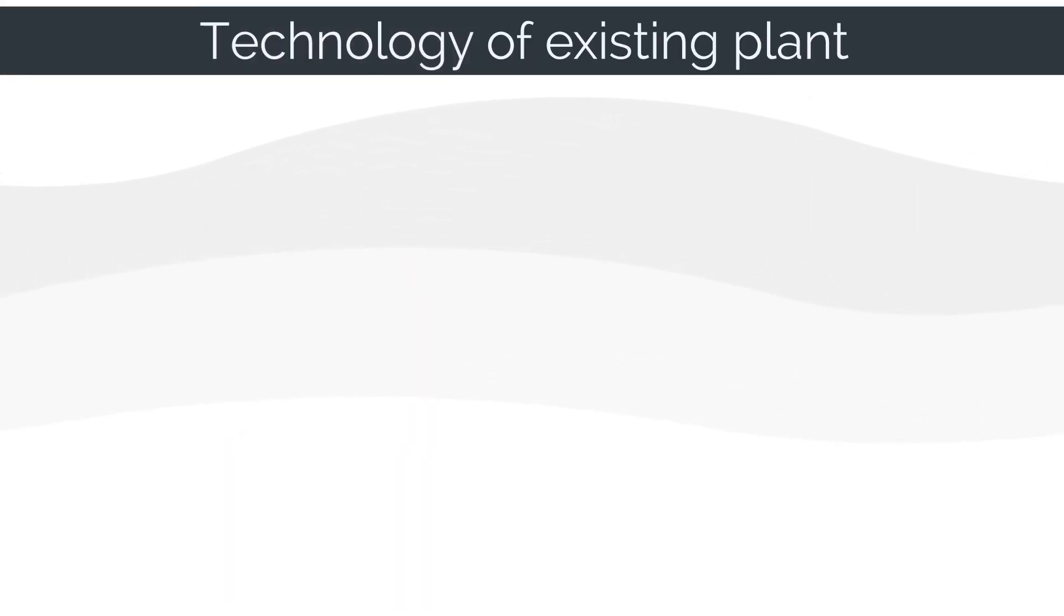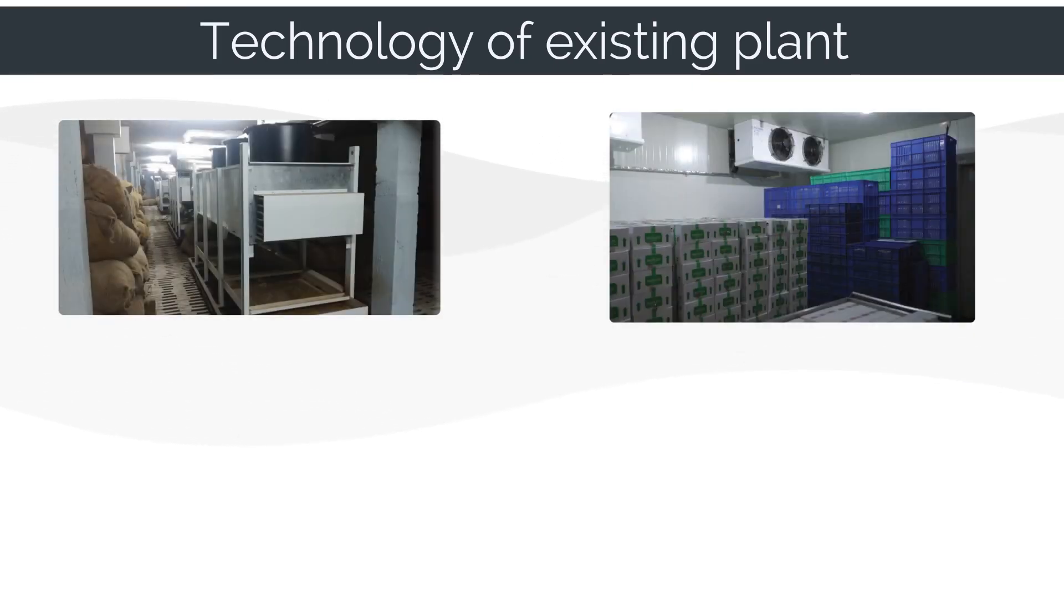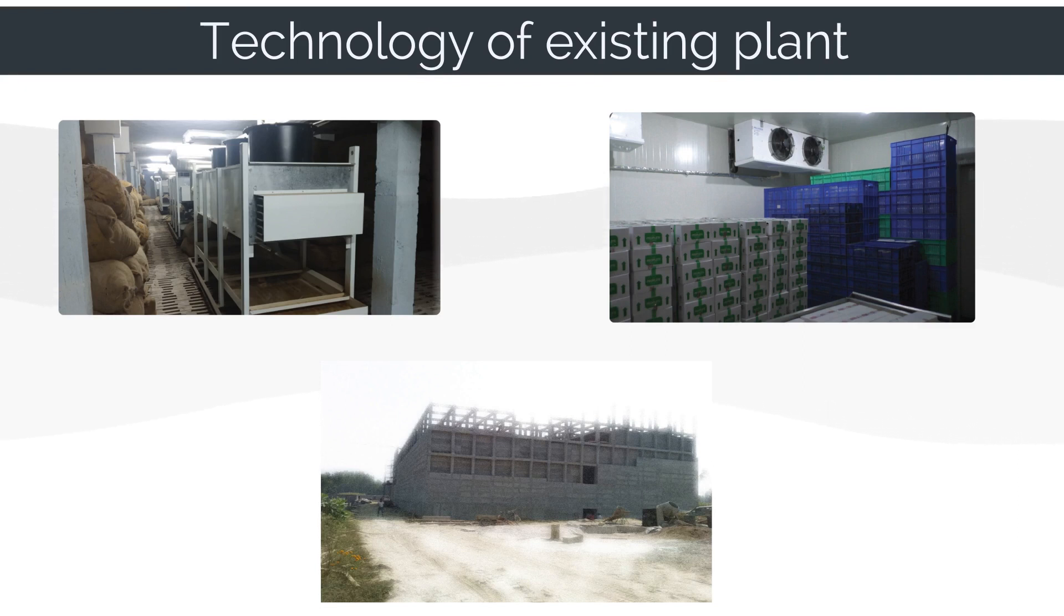4. Technology of existing plant. Many a times the customer has an existing ammonia or freon plant and the customer is considering to add more capacity. In such cases, it is quite natural that if the existing plant is ammonia or freon based, then there is already an availability of existing infrastructure which can be extended further, and using the current technology becomes preferred choice.